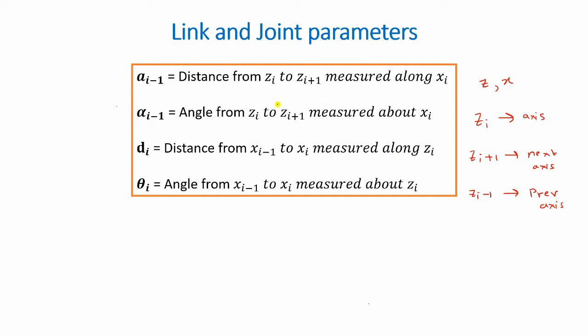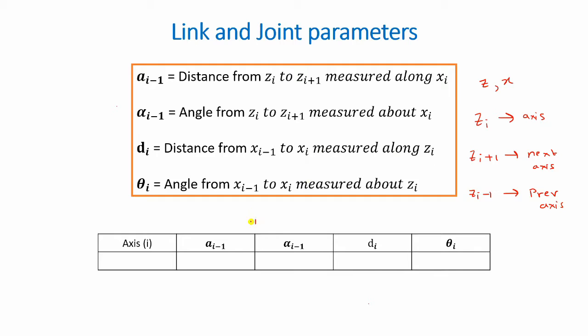Using these four values, we can form a DH table. Or a Denavit-Hartenberg table. And using the values in a DH table, we can later find our transformation matrices using a particular equation. Now using these definitions are best understood through an example. So let's have a look at it.